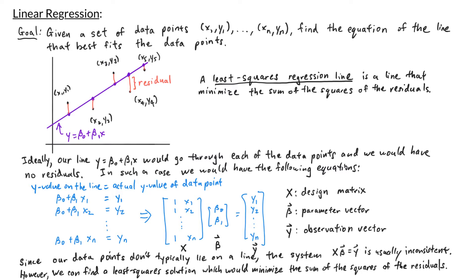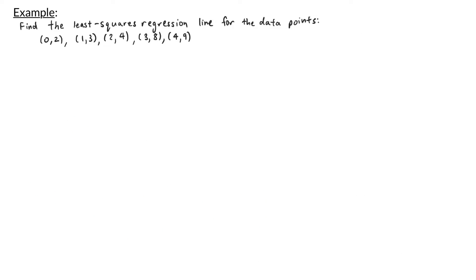Let's take a look at an example. We want to find the least-squares regression line for the data points (0, 2), (1, 3), (2, 4), (3, 8), and (4, 9).